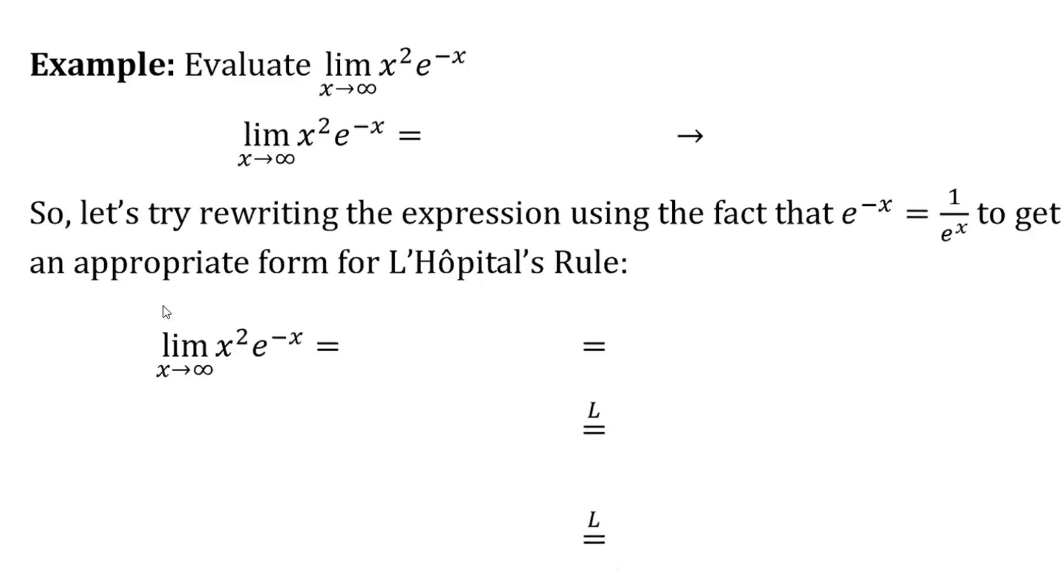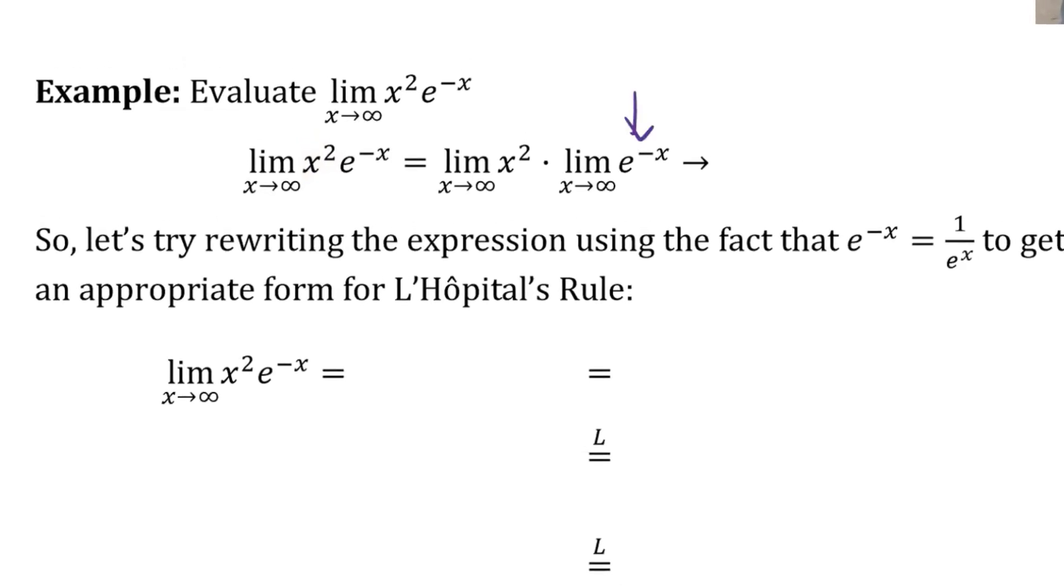But in this case, we have the x squared term would go to infinity, but what would happen to e to the negative x? So e to the negative x is the same thing, by the way, as 1 over e to the x, right? So what would be the limit as x goes to infinity of 1 over e to the x? Zero, that's right.